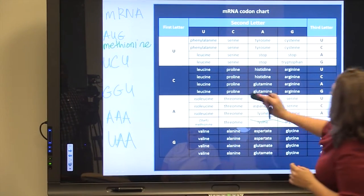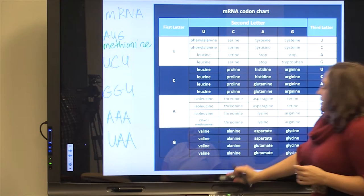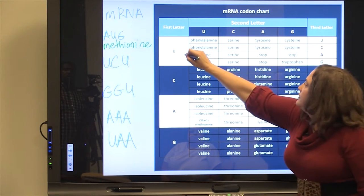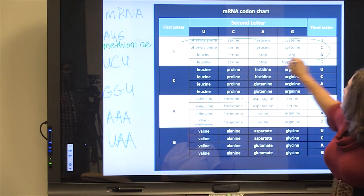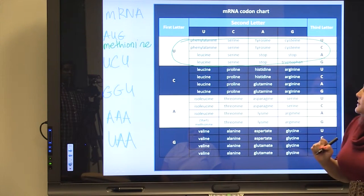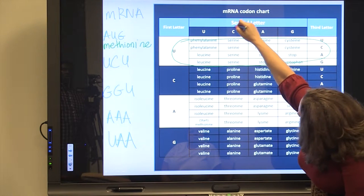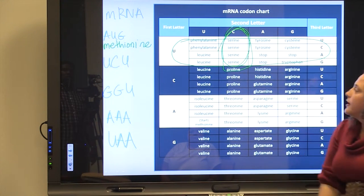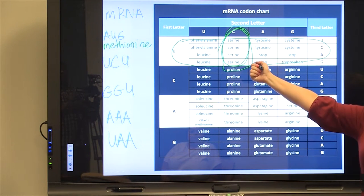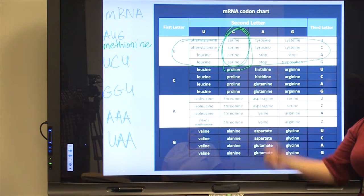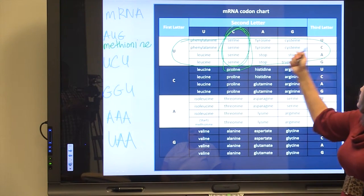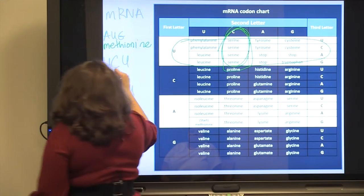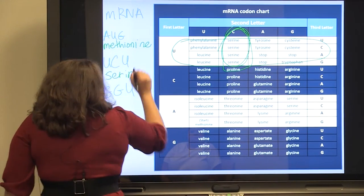And, next, U, C, U. First letter U, we know it's in this row. Second letter C, we know that it's in this column, and not only that, but the area where the column and the row meet. And, that's one of those redundant codes, like I was talking about, where they all code for serine. So, just to double check, we go U, trace it over, it's serine.